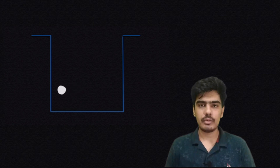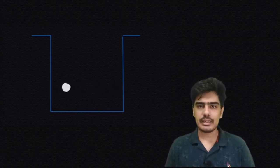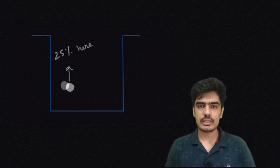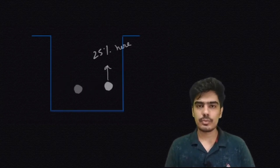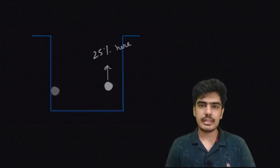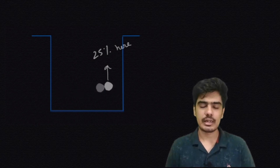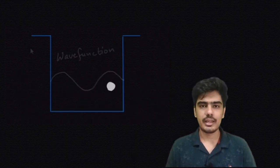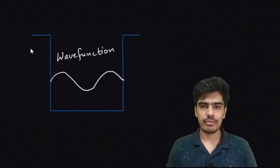Quantum mechanics is weird. Unlike classical particles, we can't predict where a quantum particle will be at any instant of time. What we can say is that a particle has this percentage of chances to be here and this percentage of chances to be here. The position of a particle is described in terms of probability, or you can say in the form of a wave function.